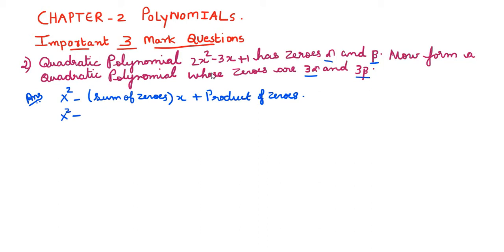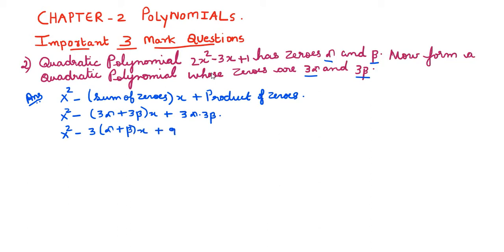The new polynomial with zeros 3 alpha and 3 beta is: x² minus (3 alpha plus 3 beta)x plus (3 alpha times 3 beta), which simplifies to x² minus 3(alpha plus beta)x plus 9 alpha beta. To find alpha plus beta and alpha beta, we use the original polynomial 2x² minus 3x plus 1.